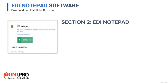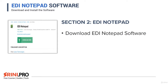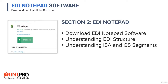In section two, we will look at EDI Notepad — we will download and install the software. In the lectures, you will see how to download EDI Notepad and understand the EDI structure. We will open up an EDI file, look at all the structures, the parts of an EDI, and how the EDI content looks. You will learn what the ISA and GS segments are in an EDI file and what the important parameters in these segments are.